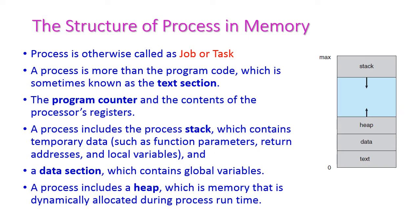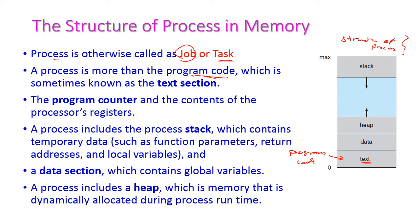Next, let us see the structure of a process in memory. A process is otherwise called a job or task. This is the simple structure of a process stored in main memory. The first section is the text section, which is nothing but the program code — the actual program to be executed.